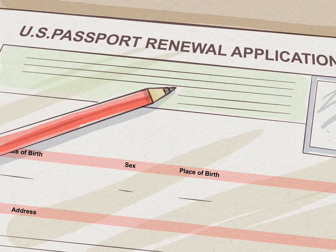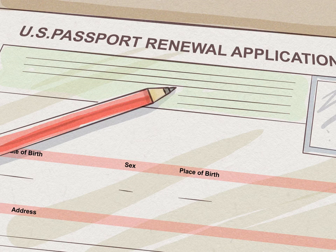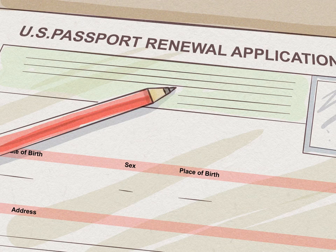Renew your passport if necessary. Your passport must be valid for six months past the date you intend to stay in the U.S. For example, if your visit ends June 12, then your passport should be valid until at least December 12. There are many exceptions depending on your country. You can see a list of countries exempted from this requirement on the Customs and Border Patrol website.